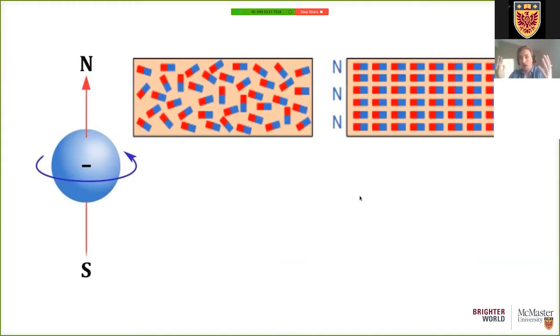In most materials that we encounter, those little bar magnets are pointing every which way. So take a block of ice. A block of ice doesn't stick to your fridge. A block of ice isn't magnetic. If you look really closely at your block of ice and you look at the electrons inside, you would see that the bar magnets they're carrying are pointing in any direction.